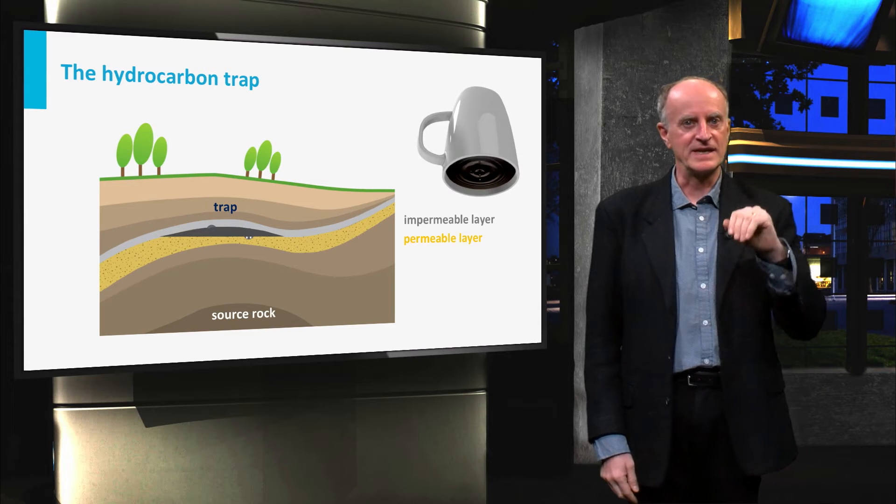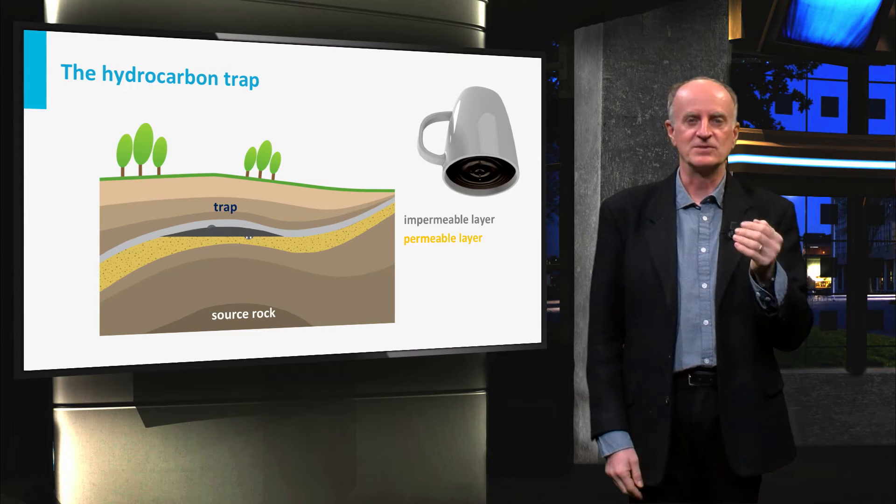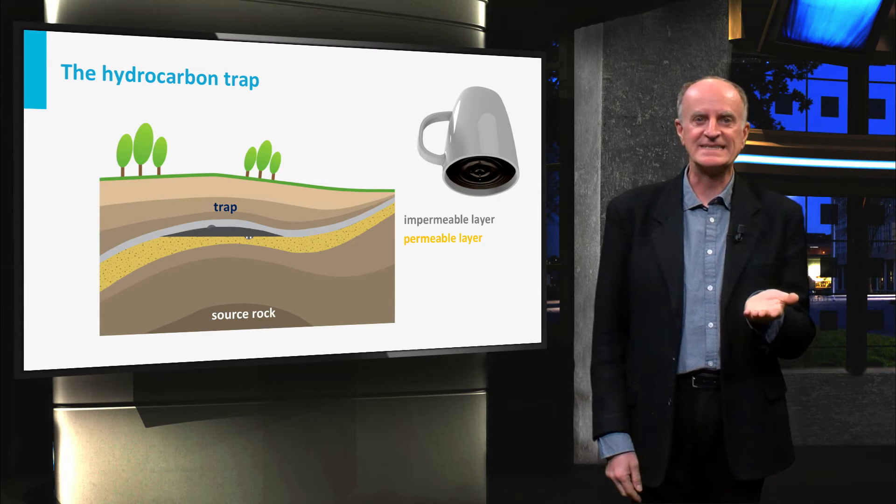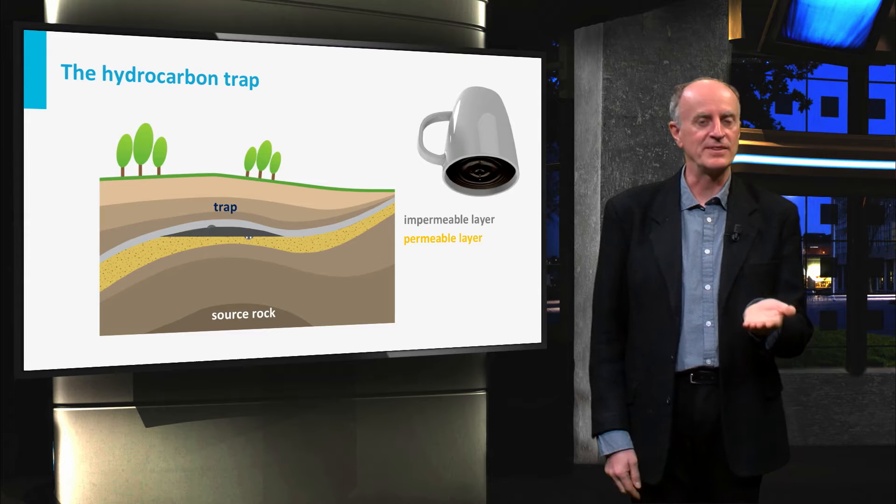A trap functions like a cup turned upside down, which is gradually filled from below. This is possible because the hydrocarbons are less dense than the surrounding water and will therefore rise.